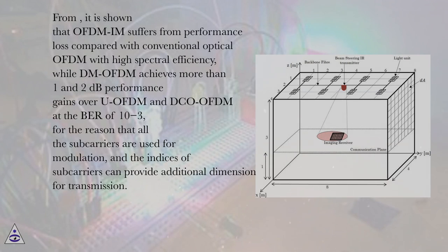From the figure, it is shown that OFDM-IM suffers from performance loss compared with Conventional Optical OFDM with High Spectral Efficiency, while DM-OFDM achieves more than 1 and 2 dB performance gains over U-OFDM and DCO-OFDM at the BER of 10^-3,